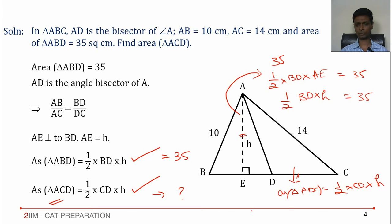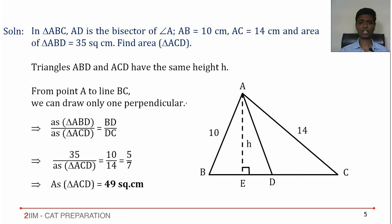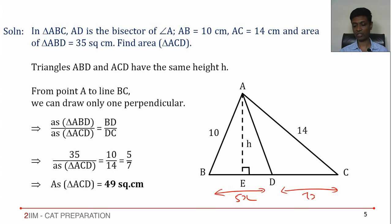We already know something linking BD and DC: BD/DC = 5/7, so CD = (7/5) times BD. Area of triangle ABD = half times BD times h = 35. Area of triangle ACD = half times CD times h. Since BD/DC = 5/7, the areas are in ratio 5:7. If BD is 5x and CD is 7x, then half times 5x times h = 35 and half times 7x times h = 49. So area of triangle ACD = 49.